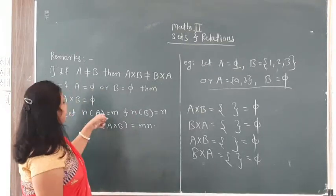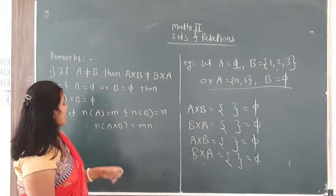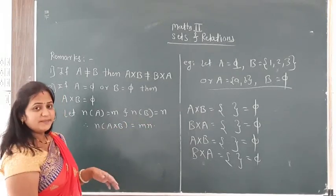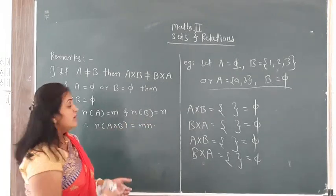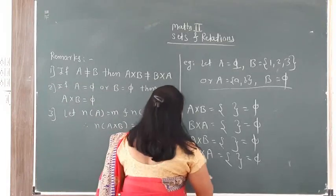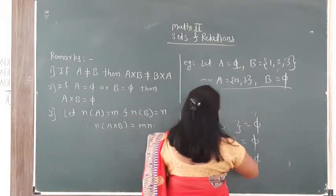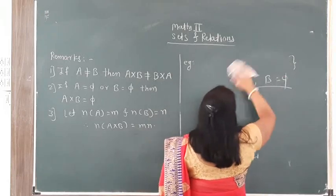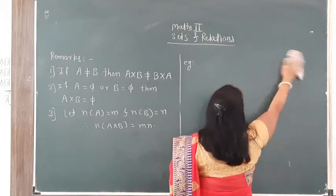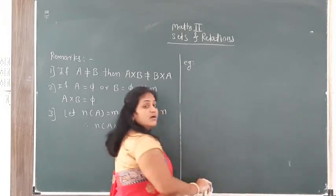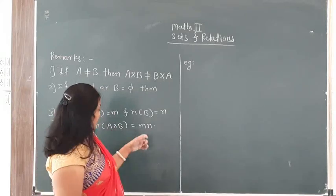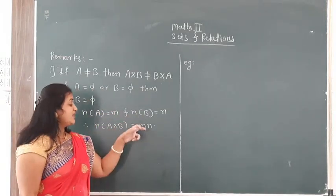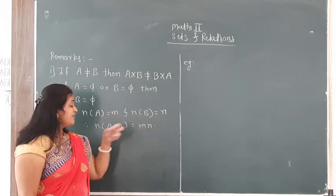Next remark: if n(A) equals M and n(B) equals N, then n(A cross B) equals M multiplied by N. The number of elements in A set multiplied by the number of elements in B set gives the number of elements in the Cartesian product A cross B.